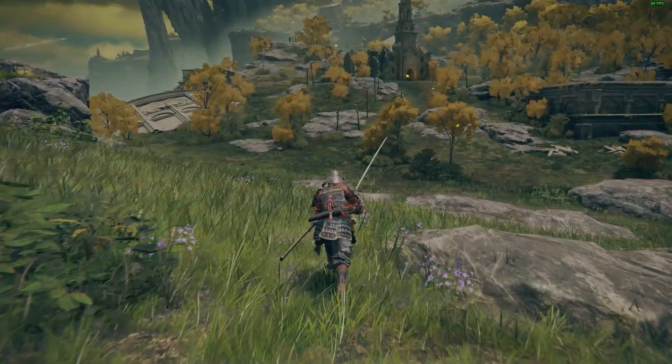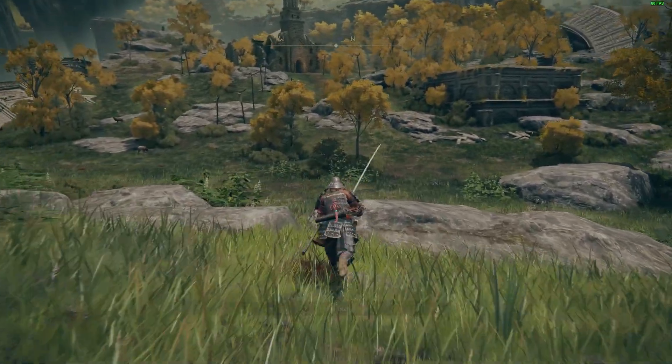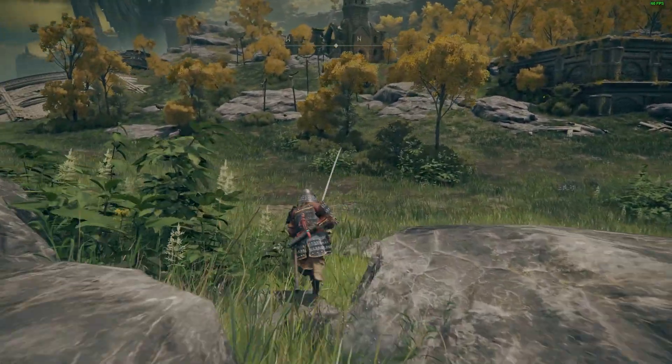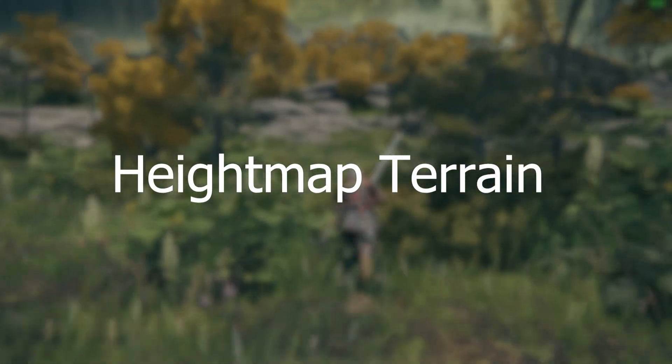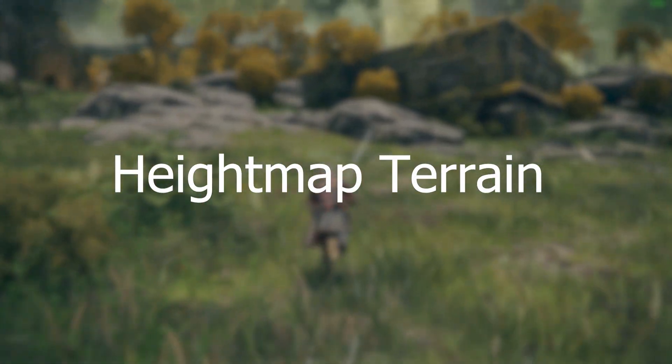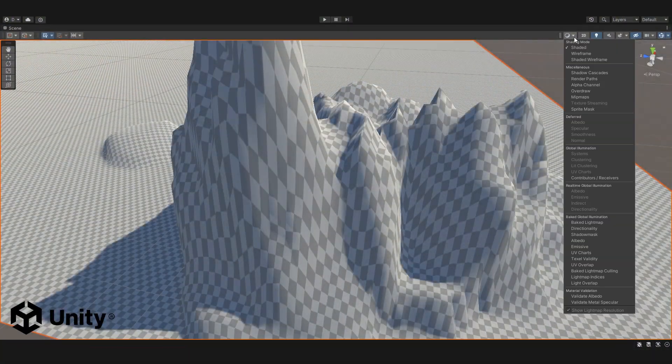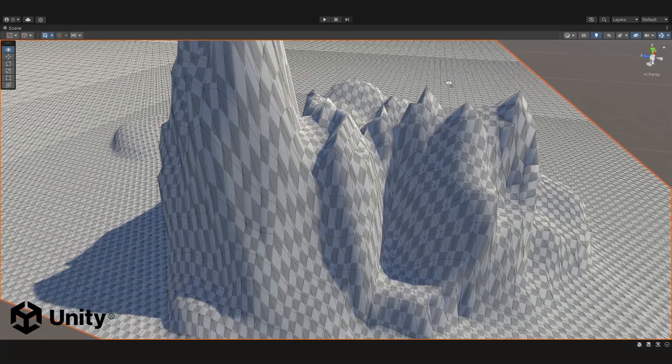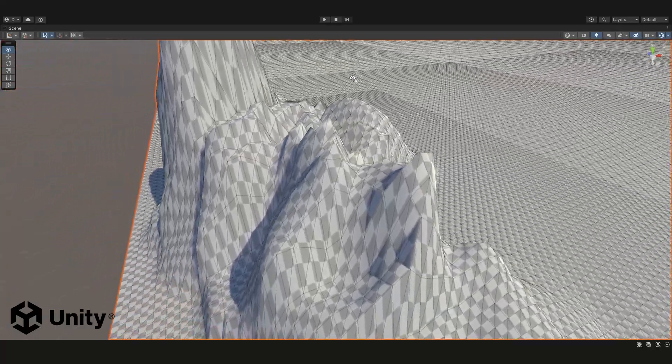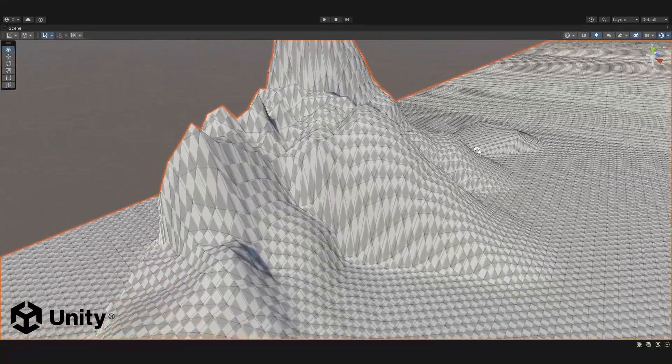In video game development, there are a few types of terrain, so let's make it clear what I have in mind right now. Specifically, we will start on something known as height map terrain. This is the most popular type of terrain you'll see in open-world video games. Height map terrain is essentially a plane that has a bunch of points that can be raised up and down, allowing us to create hills, valleys, riverbeds, and paths.